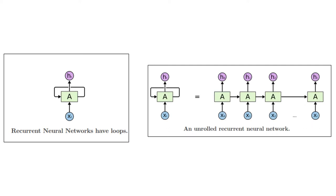The chain-like nature reveals that recurrent neural networks are intimately related to sequences and lists. They are the natural architecture of neural networks to use for such data. In the last few years, there have been incredible success applying RNNs to a variety of problems like speech recognition, language modeling, translation, image captioning, and the list goes on.